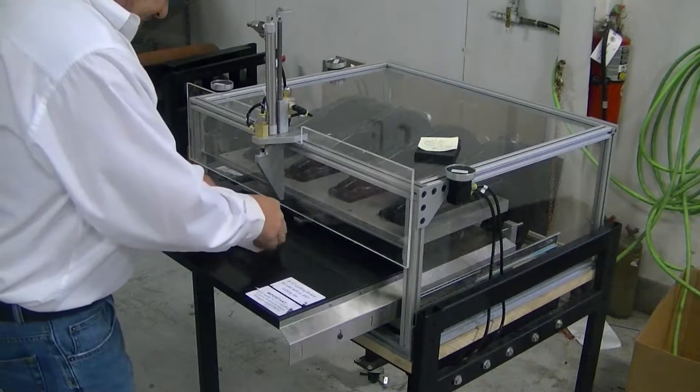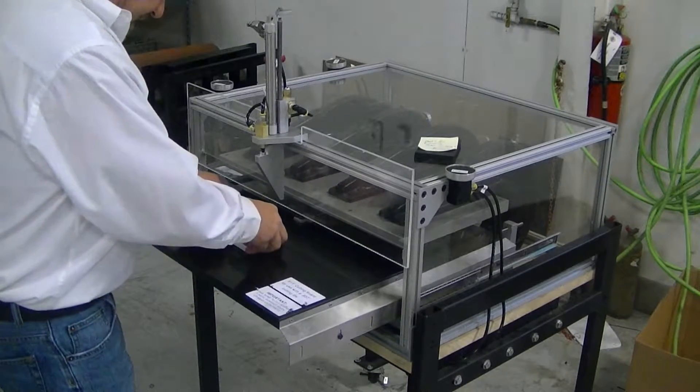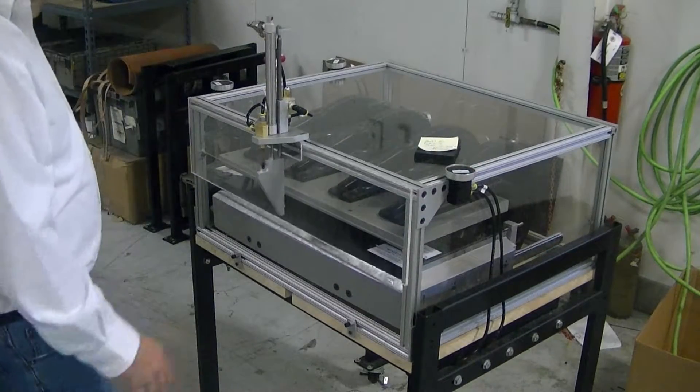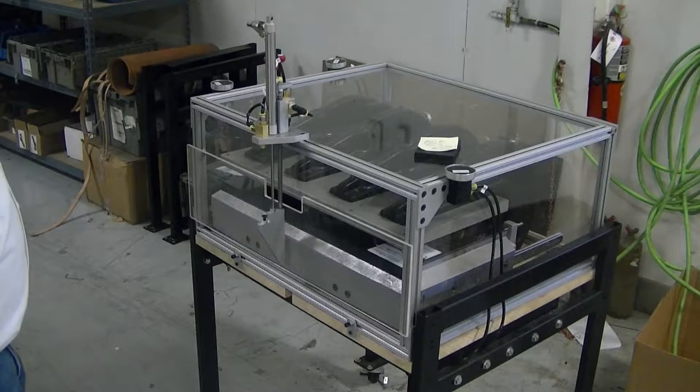Simply set your material on there. You'll put your die on top of that. You'll hit both these buttons. The machine will operate.